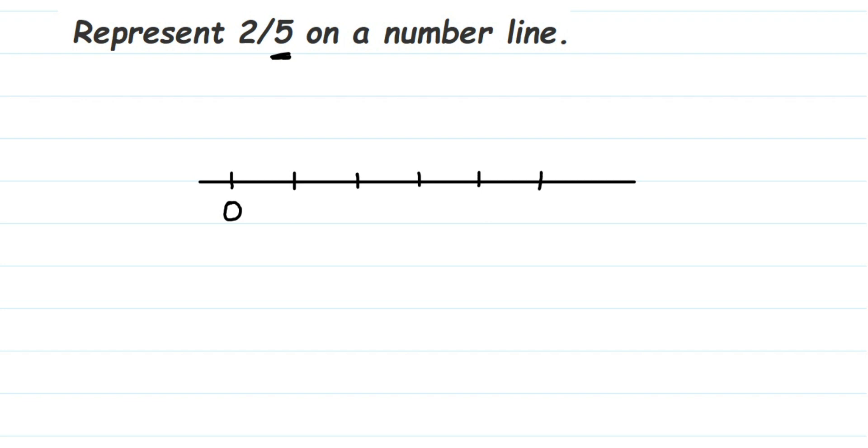Okay, now we have divided, so the last one will be your 1. Now we have 2/5, right? So first will be after 0 we'll get 1 by 5. This is the first part, 1/5, and this will be 2 by 5.